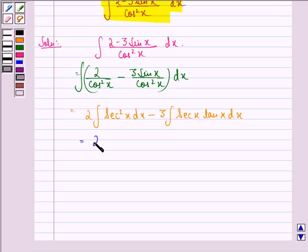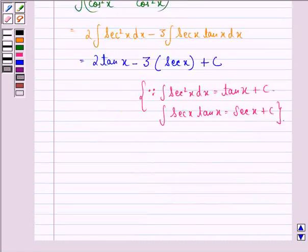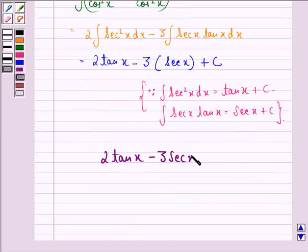Now, this becomes equal to 2 tan x minus 3 into secant x plus c. This happens because integral of secant square x dx is equal to tan x plus c. So, our answer to this question is 2 tan x minus 3 secant x plus c.